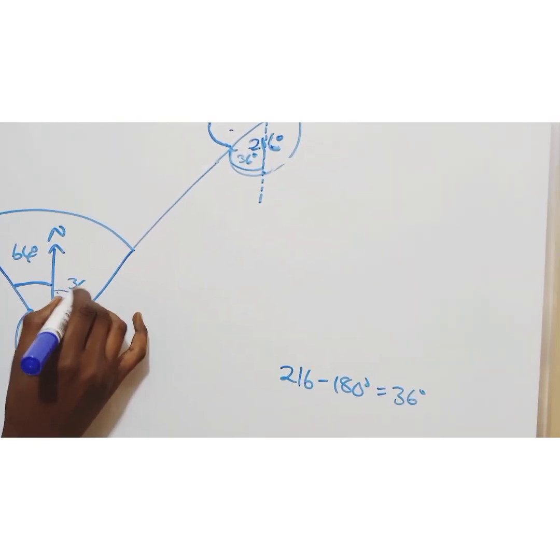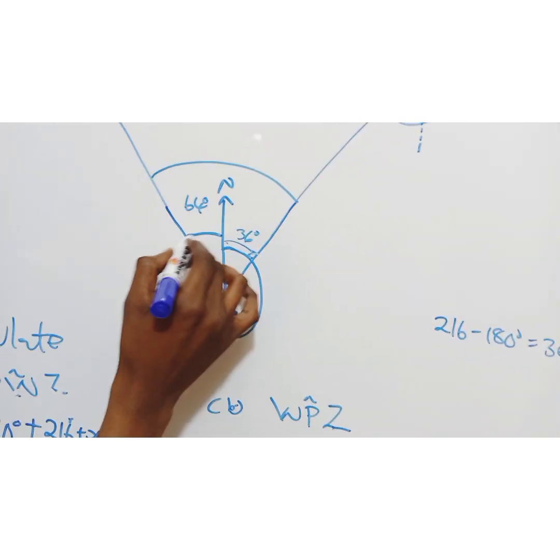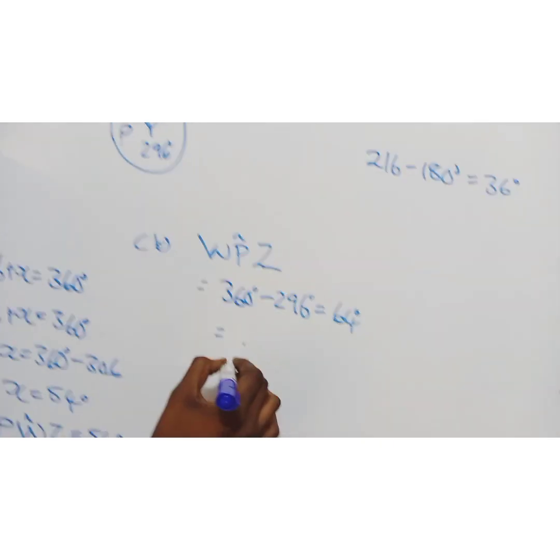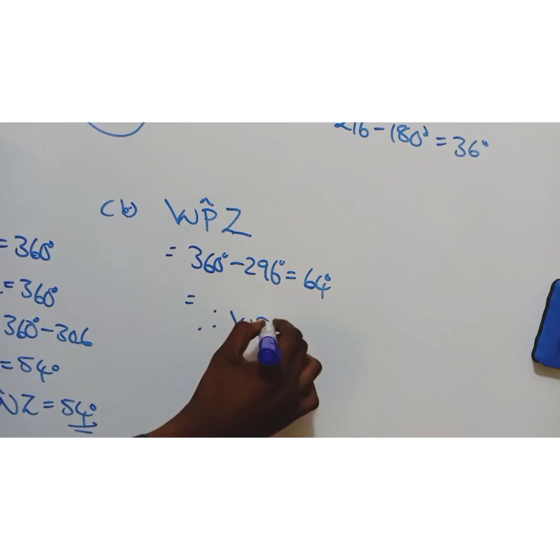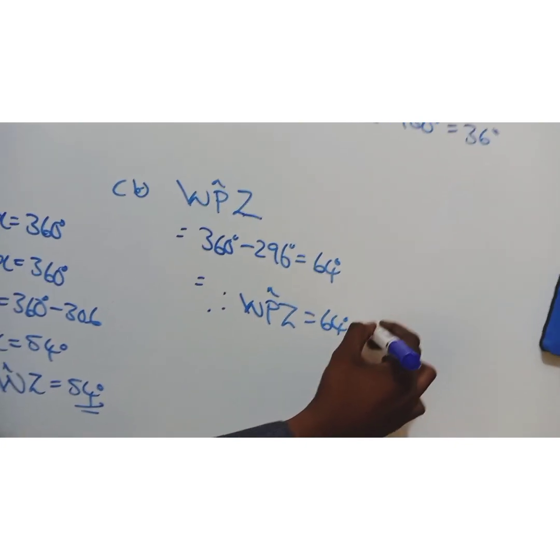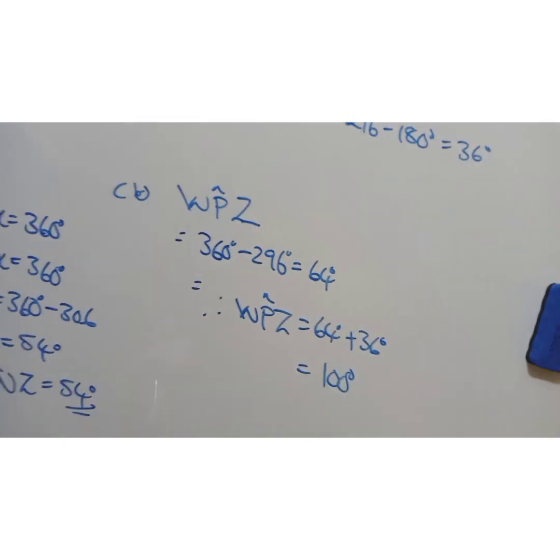I'm almost there. I have my 64 from here up to here, I have my 36 from here up to here. So simple, therefore WPZ equals 64 degrees plus 36 degrees. This will give me 100, done.